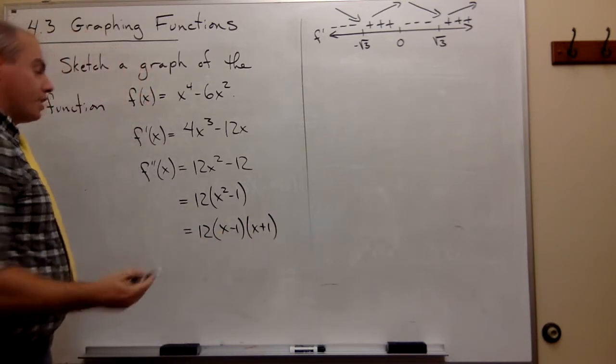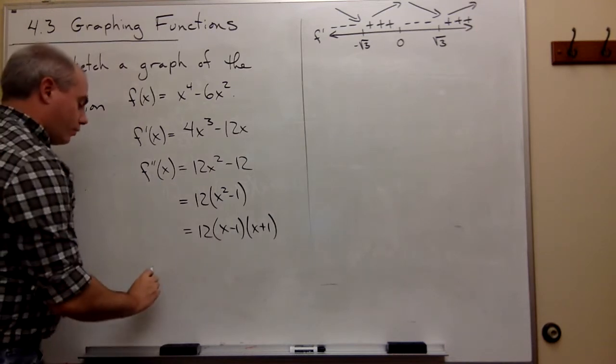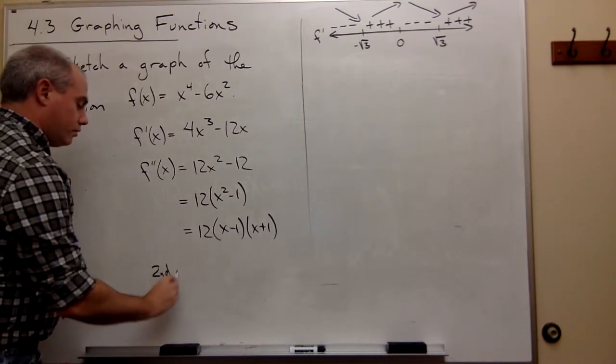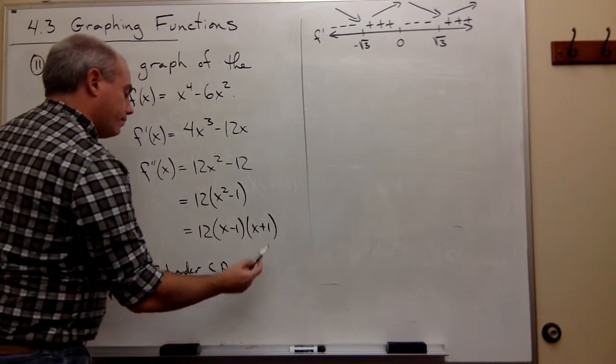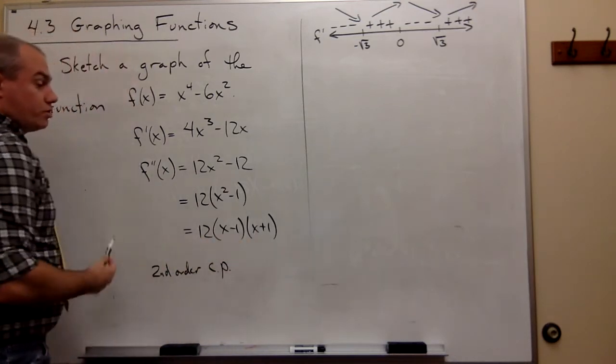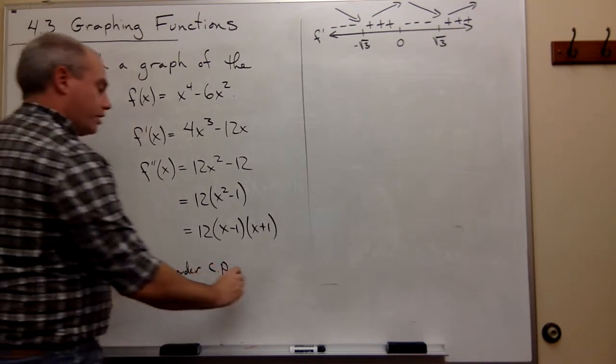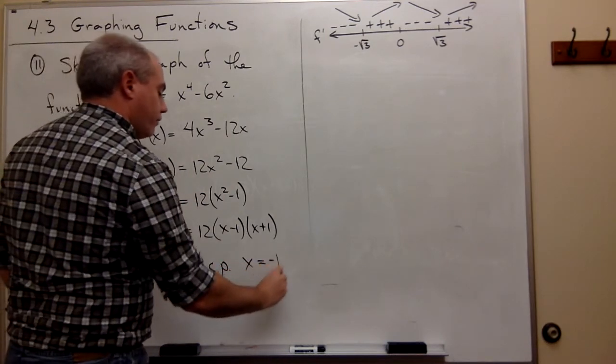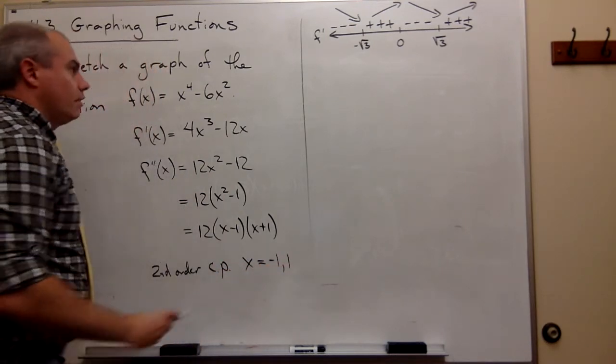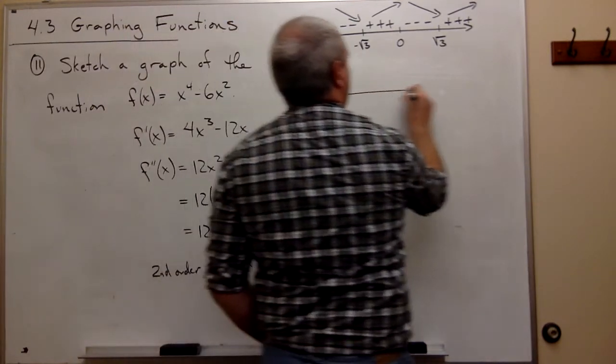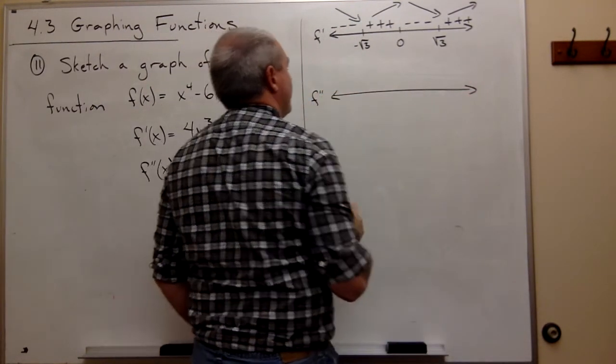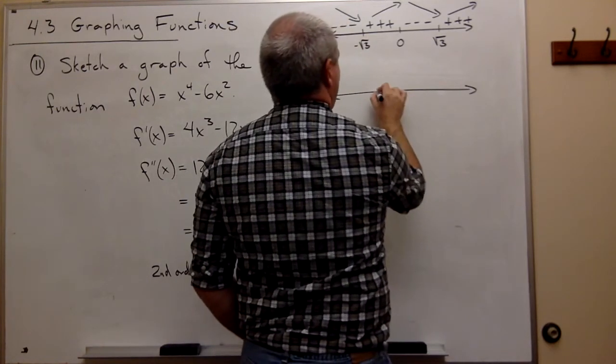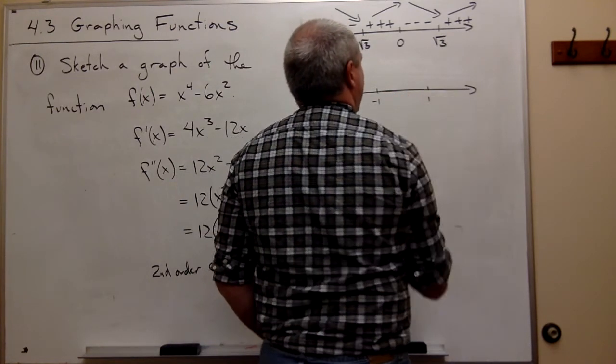So my second order critical points would be just 1 and minus 1. So I can go up here and I can make another number line, this time for f double prime. And on that number line, I want negative 1 and I want 1.